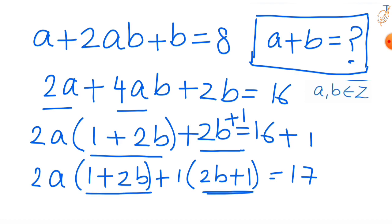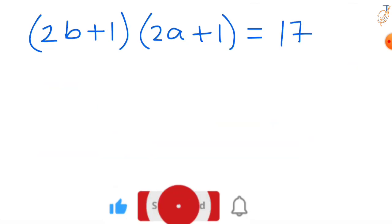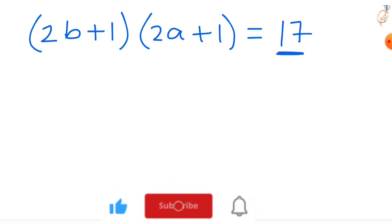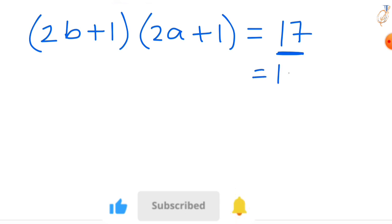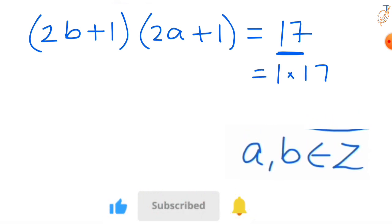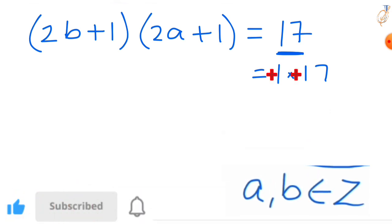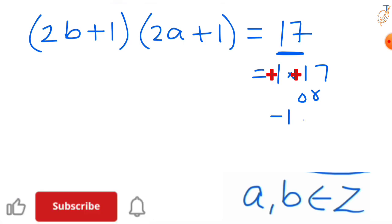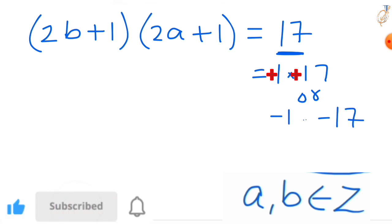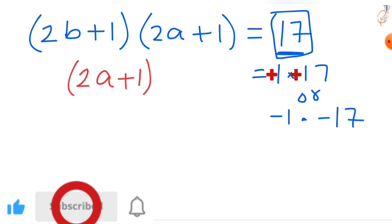Take (2b + 1) as a common factor, leaving (2a + 1)(2b + 1) = 17. Since 17 is a prime number, its only integer factor pairs are 1 × 17 and −1 × −17.